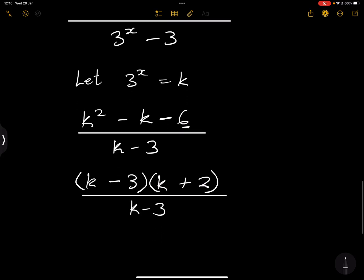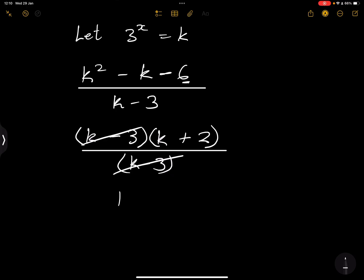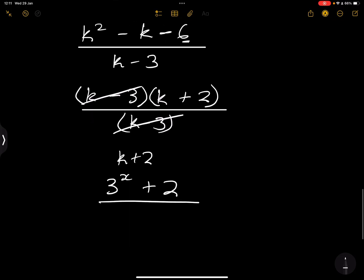So that will be K minus 3. Ladies and gents, I cannot emphasize the importance of knowing how to factorize. So please, if you are not good at it, please watch my videos on factorization. It is very important. So K minus 3 and K minus 3 cancel out and we've got K plus 2 as our final answer. But please remember, what does K represent? It represents 3 to the power of x plus 2. And in this case we cannot simplify any further. That would be our final answer.